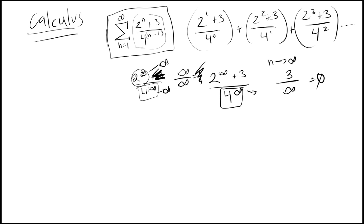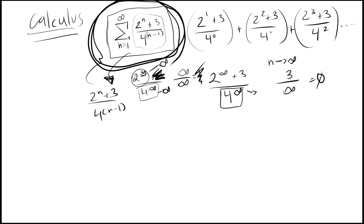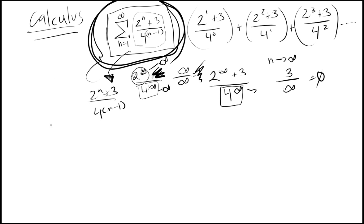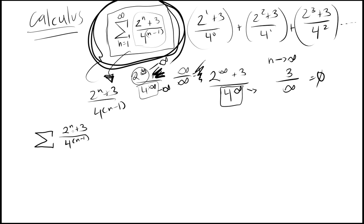I don't actually know how to find what infinity over infinity goes to, but I can find the sum here — I figured this one out. So let's go over properties of sums. This sigma notation means the sum of all numbers: 2 to the n plus 3, over 4 to the n minus 1, where n starts at 1 and goes to infinity.